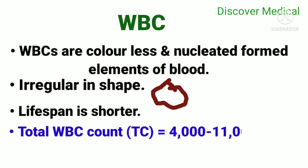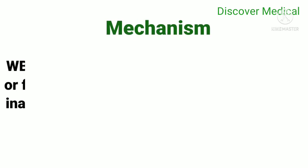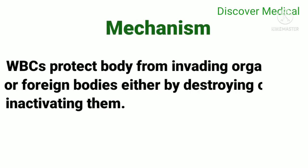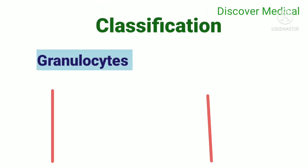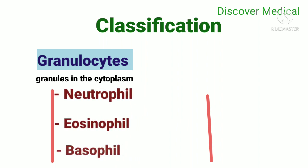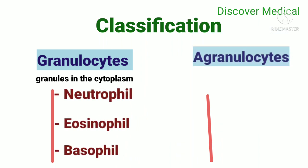The total WBC count is 4,000 to 11,000 per cubic millimeter. The mechanism: WBCs protect the body from invading organisms or foreign bodies either by destroying or inactivating them. Classification: granulocytes, which means granules in the cytoplasm, include neutrophils, eosinophils, and basophils.